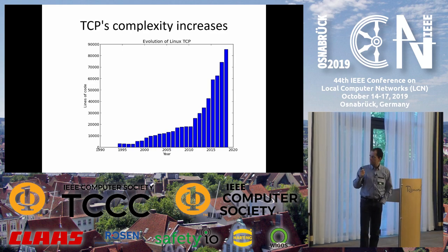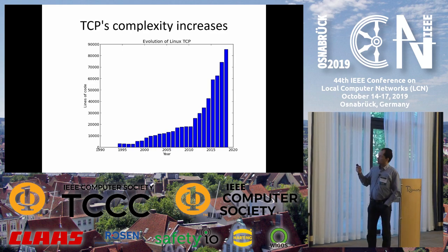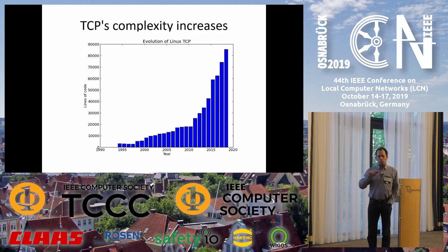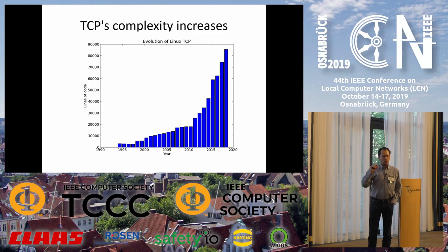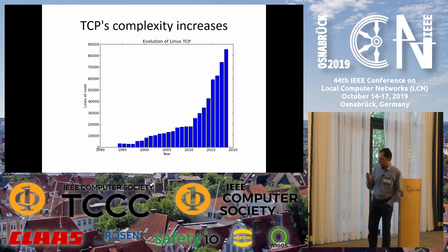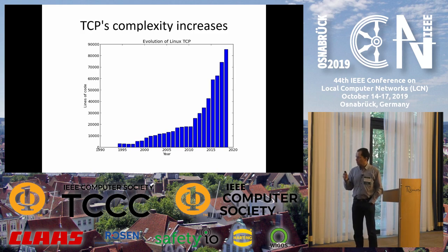TCP is not that young. LCN is 44, and TCP is probably older than LCN. If you look at just the evolution of the TCP stack in the Linux kernel between 1993 and today, the number of non-comment lines in the TCP stack of Linux starts from a few thousand lines to almost 100,000 lines today. And this complexity continues to grow.